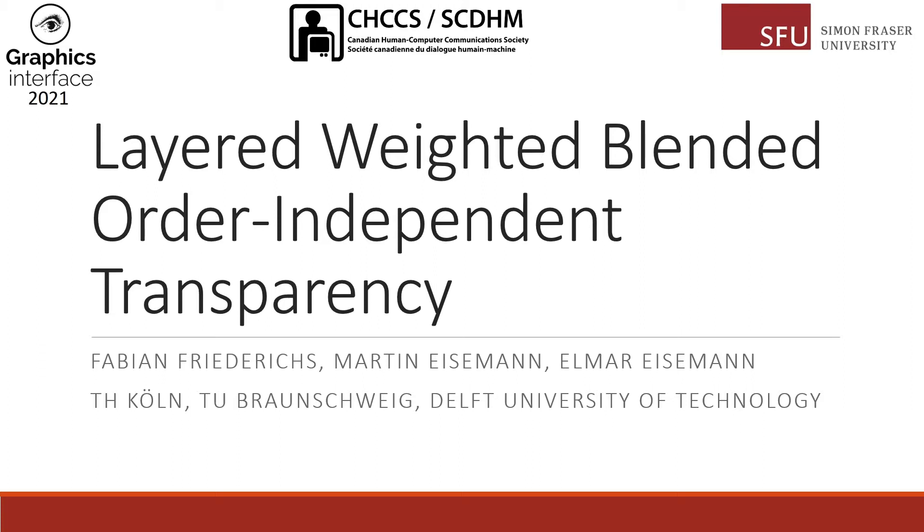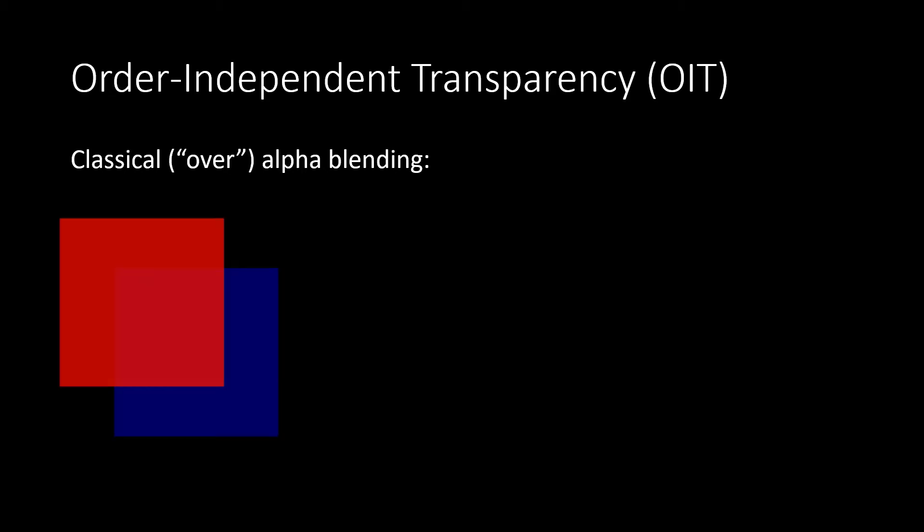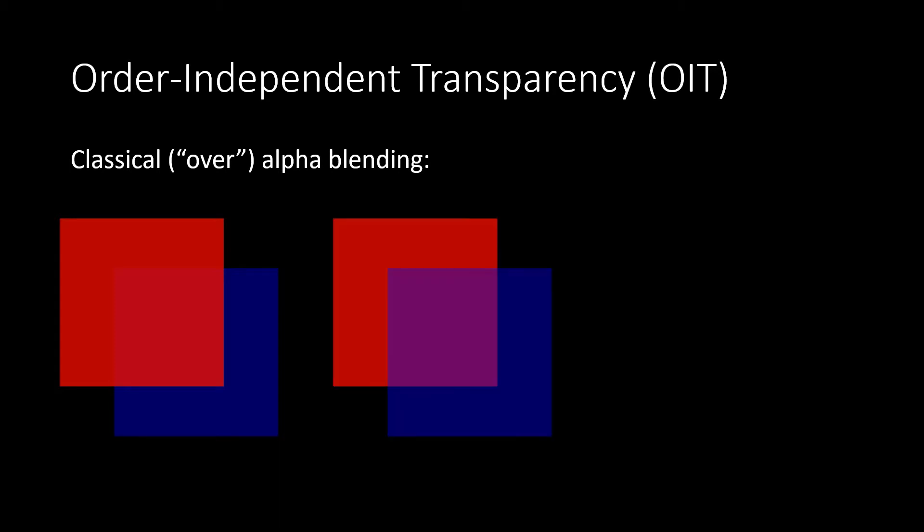The goal of this work was to accelerate rendering of semi-transparent surfaces in rasterization. When we use classical alpha blending for rendering transparent surfaces, the order of submission of the primitives strongly affects the result. Here we have two differently colored quads, slightly transparent, and if we flip the order, we immediately get a totally different result.